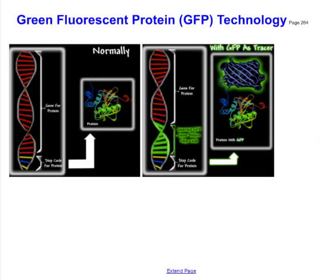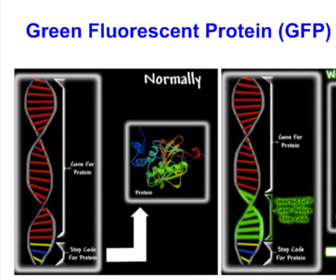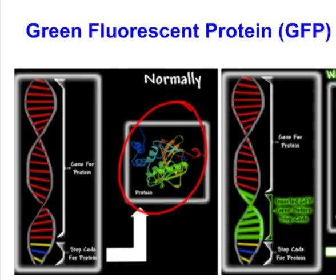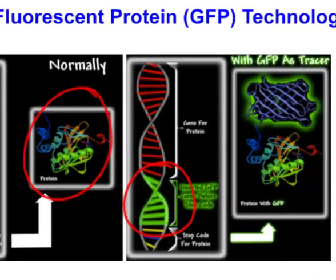We also have a way of tracing what's going on in our DNA by using what's called green fluorescent protein technology, or GFP. For example, if we sequence the gene for a protein, we get something like this — but finding this little protein in the body would actually be very difficult.